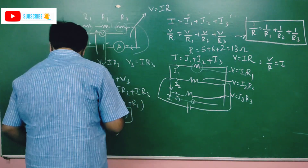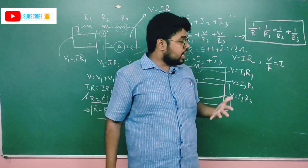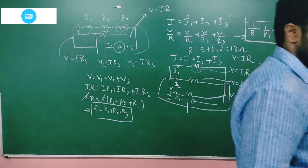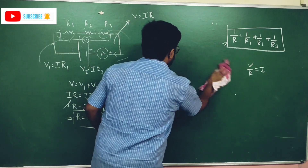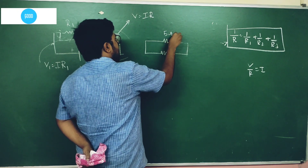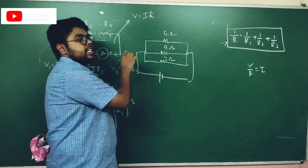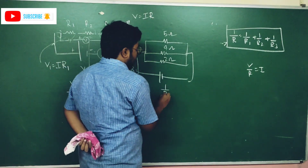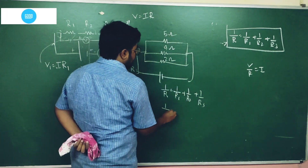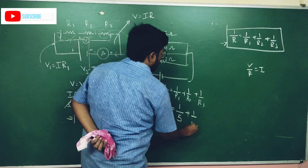Now we will do one problem. We have a parallel connection with resistors of 5 Ohms, 4 Ohms, and 2 Ohms, and a battery connected. We will check the total resistance using the formula. 1 over R total equals 1 over R1 plus 1 over R2 plus 1 over R3, which is 1 over 5 plus 1 over 4 plus 1 over 2.